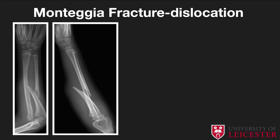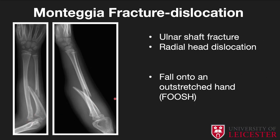Starting with two particular fracture patterns in the lower forearm: the Monteggia and the Galeazzi fractures. The Monteggia fracture involves an ulnar shaft fracture together with a radial head dislocation. It typically results from a fall onto an outstretched hand, producing a displaced and overlapped appearance of the ulnar shaft, with the radial head dislocated anteriorly.